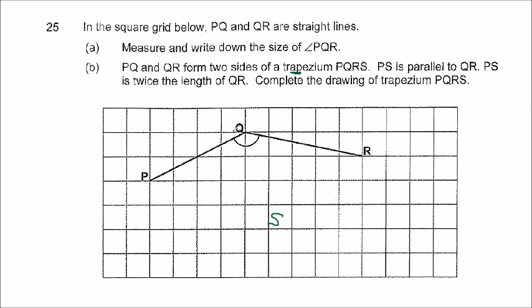What we have to ensure is that it has to be parallel to QR. PS is actually twice the length of QR.